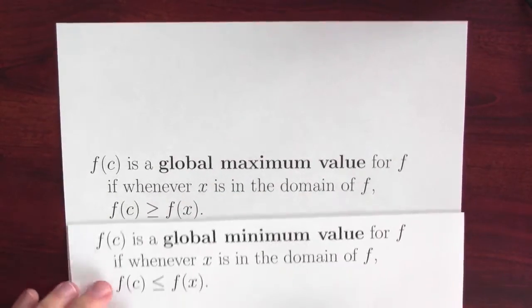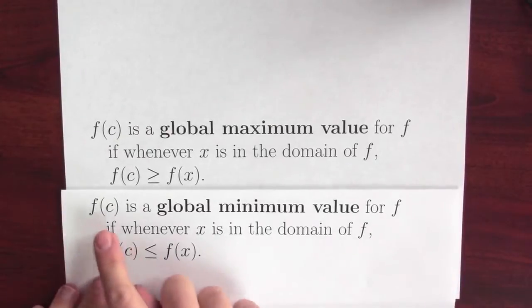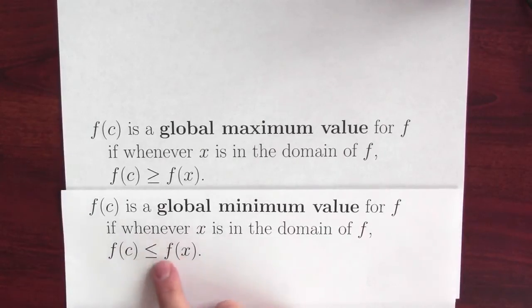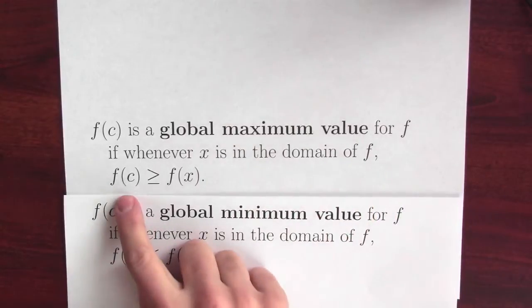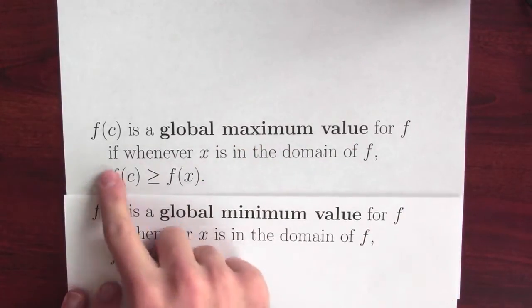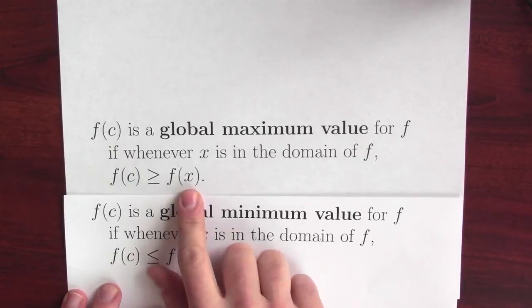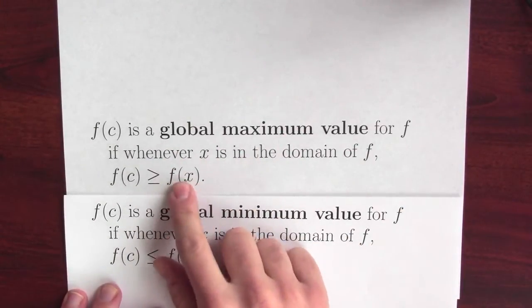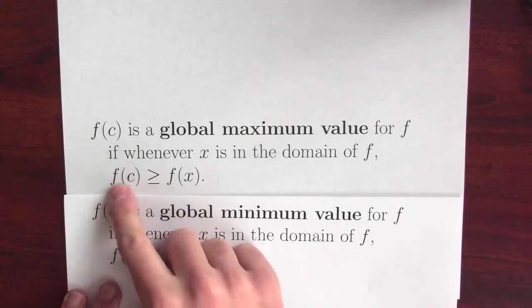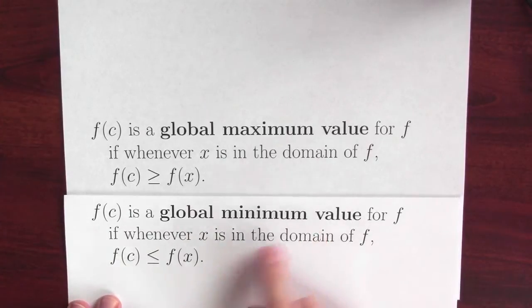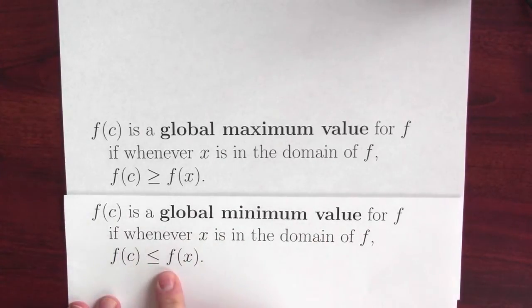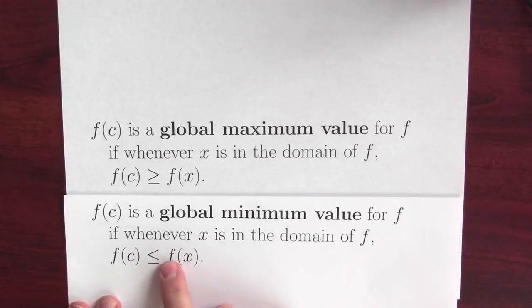Do the same deal for minimum values. f of c is a global minimum value for the function if whenever I've got a point in the domain, f of c is less than or equal to f of x. One subtle thing to point out here is that I'm not claiming, say, for global maximum values that this is the biggest output of the function. What I'm saying is that any other output isn't larger than f of c. f of c is bigger than or equal to any other output of the function. And the same deal for this global minimum. I'm not saying this is the smallest output of the function. I'm just saying that any other output is bigger than or equal to this output.